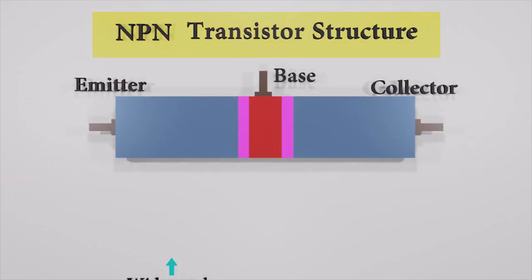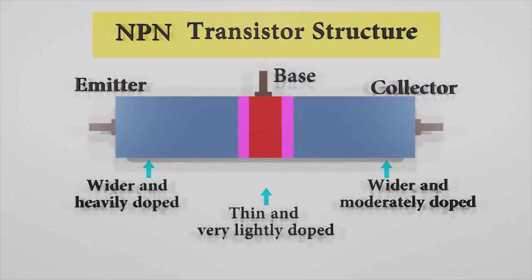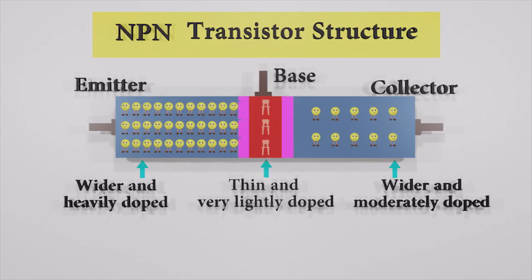Its emitter region is heavily doped and wider, hence the number of free electrons is large here. The collector region is also wider, but it is moderately doped. Hence, the number of free electrons is not as much as the emitter region.